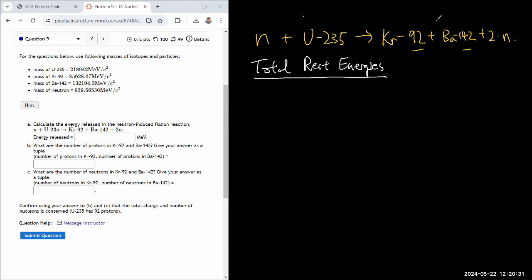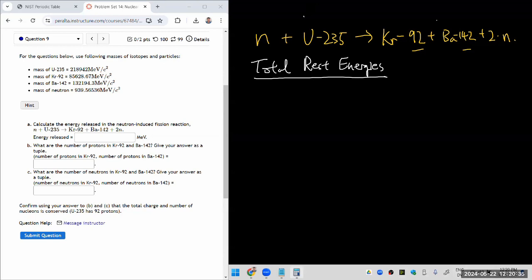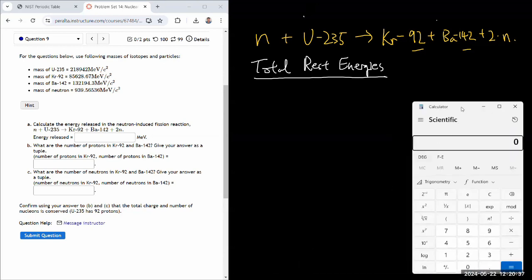So let me use my calculator to do that calculation. So on the reactants side, I have neutron, which has rest mass of 939.56536. I'm keeping all the significant figures in case the difference turns out to be small. Plus uranium-235, 219894.2. It's equal to that.